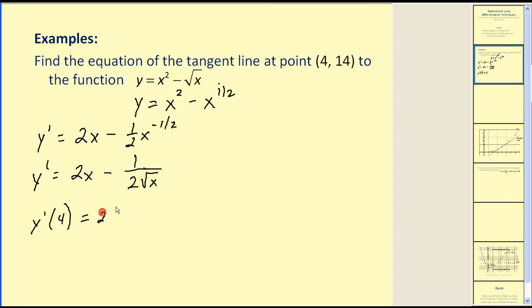So we have 2 times 4 minus 1 divided by 2 times the square root of 4. So y prime of 4 will be equal to 8 minus, the square root of 4 is 2 times this 2 would give us a negative one-fourth, or minus one-fourth, which would equal 31 fourths, or 7.75.